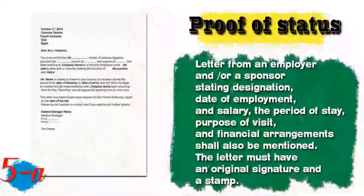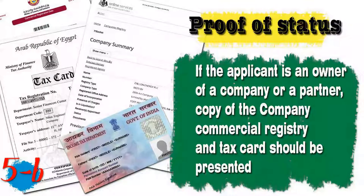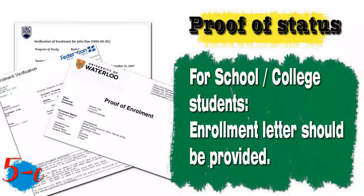Document five is proof of status. If you are an employee, you will need a letter from your employer or HR office stating your designation, date of employment, salary, period of stay, purpose of visit, and financial arrangements, with an original signature and stamp. If you own or are a partner in a company, provide a copy of the commercial registry and tax card. If you are a student, provide an enrollment letter.